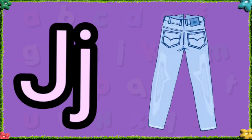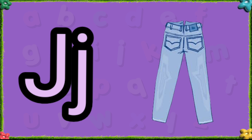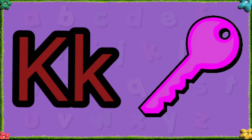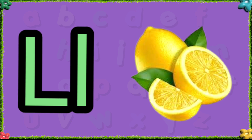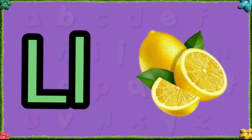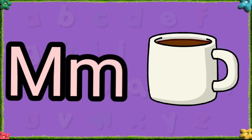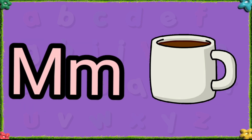A is for ice cream. J is for jeans. K is for key. L is for lemon. M is for mug.